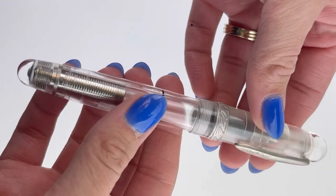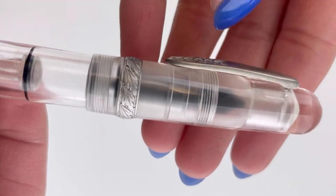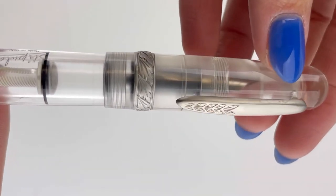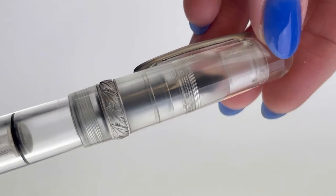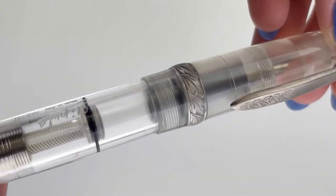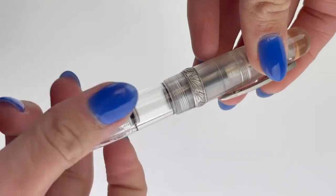This is the Stipula Etruria Rainbow Fountain Pen in crystal clear, and it does have silver trim. We already received the same pen in clear yellow, and there's going to be more colors on the way. A veritable rainbow of colors, you might say. This is the crystal clear, though. Let's get a better look.